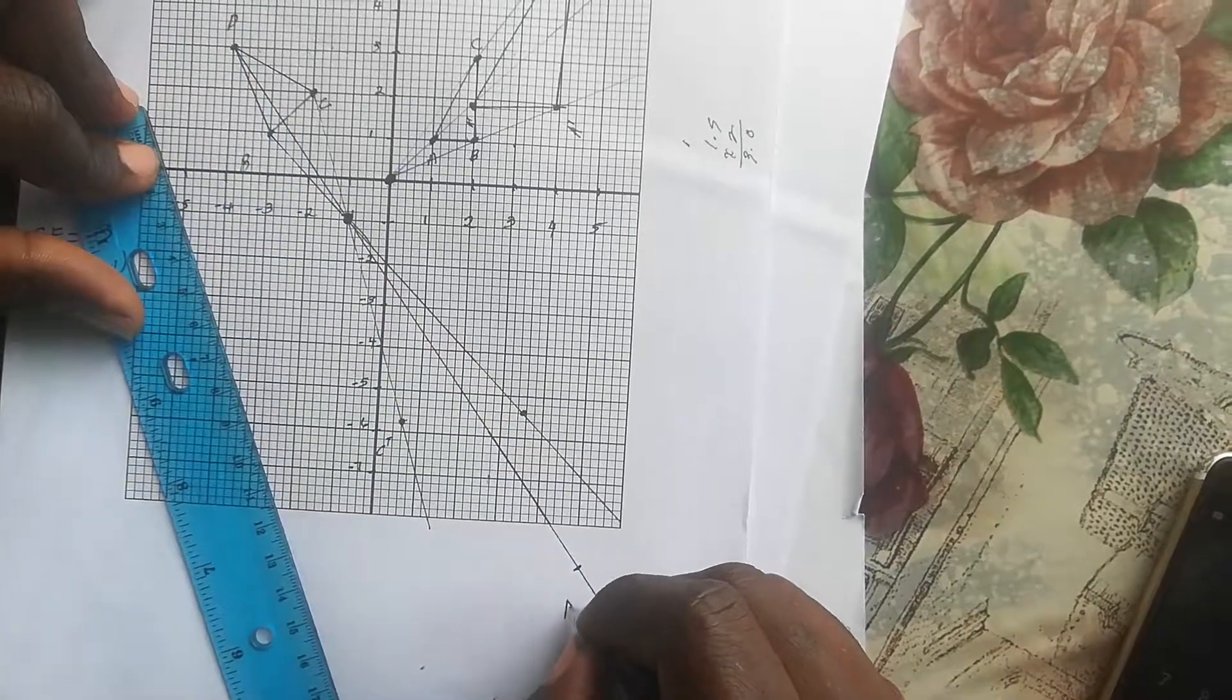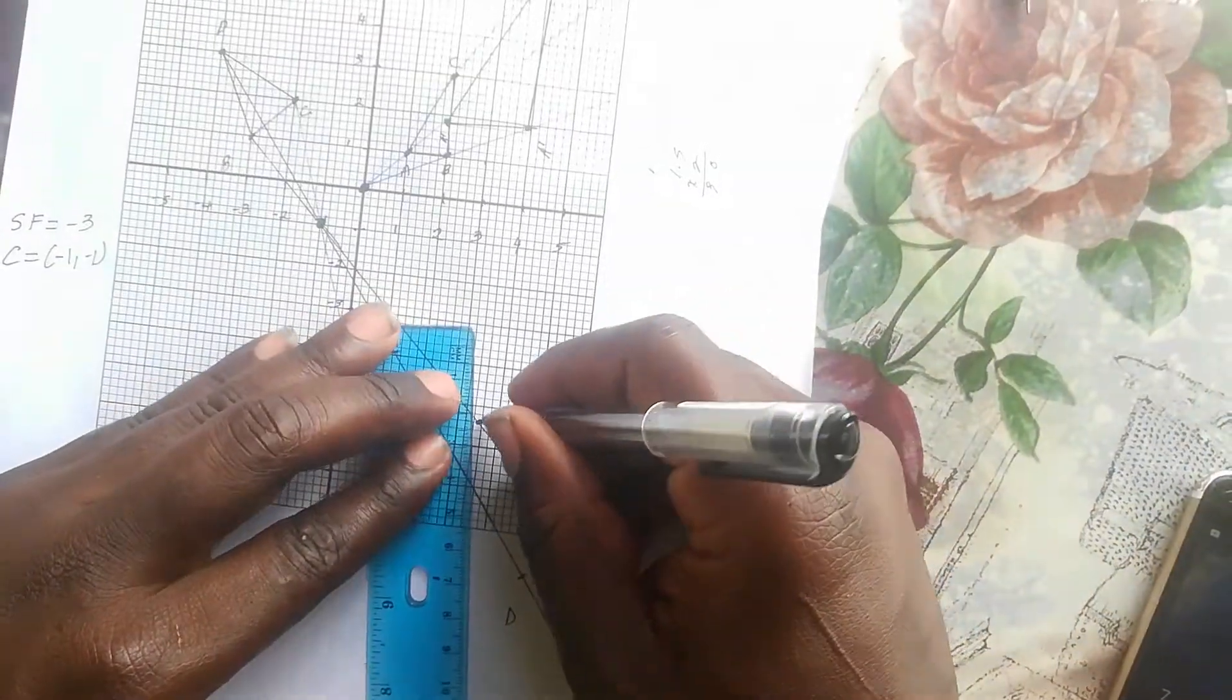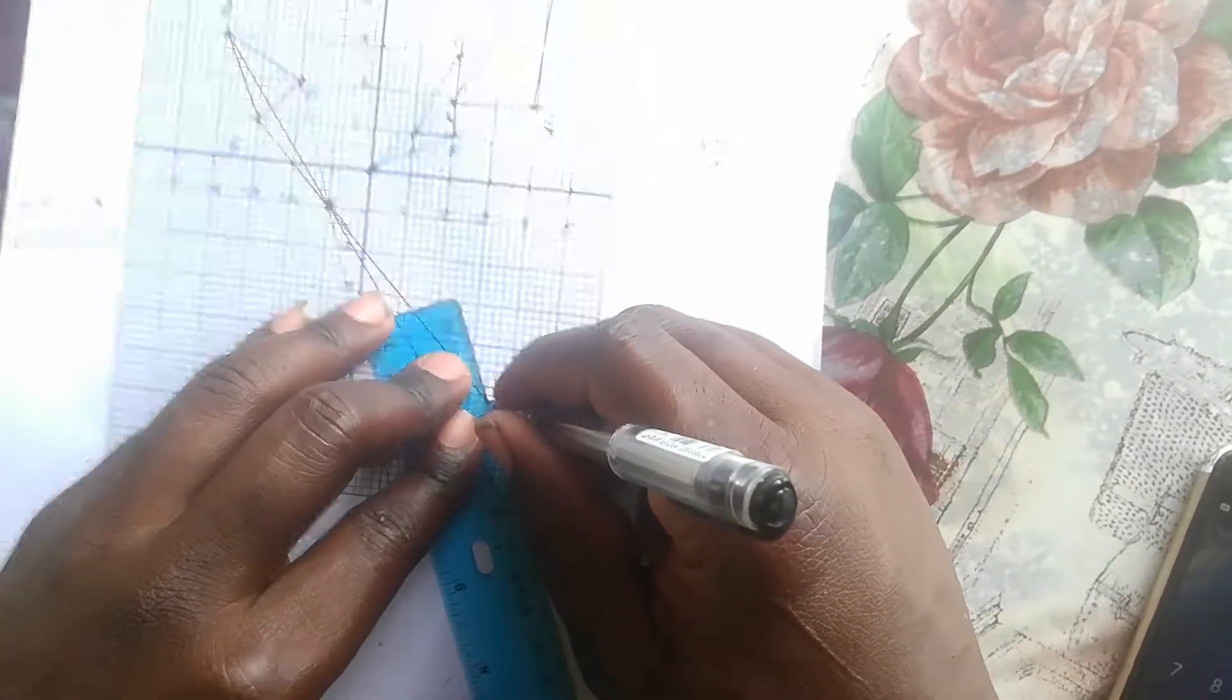We mark the points, then take our ruler and pencil and just connect them.